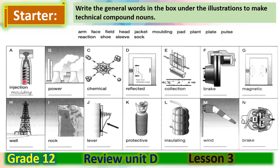You have to write them to make compound nouns. Let's have a look at the first example here: injection what? We can't say injection arm or injection face or injection reaction, but we can say injection molding. Now I'll give you some time to look at the rest of the pictures and try to complete them to form compound nouns. You have five minutes and you can start now. When you finish, play the video again to check your answers.